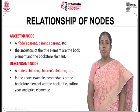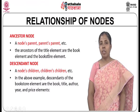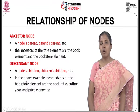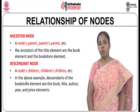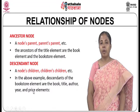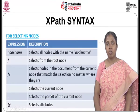There is a node called ancestor node. Any node's parent or parent's parent is called an ancestor node. The ancestors of the title element are the book element and the bookstore element. Descendant nodes are the node's children or children's children. In the above example, the descendants of the bookstore element are book, title, author, year, and price. The descendants of the book element are title, author, year, and price. All children and children's children are called descendant nodes.